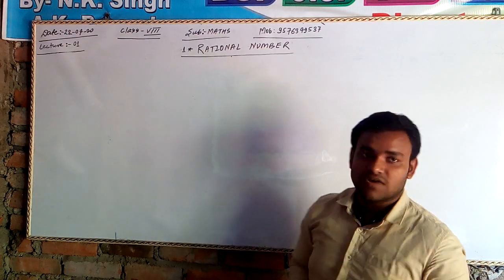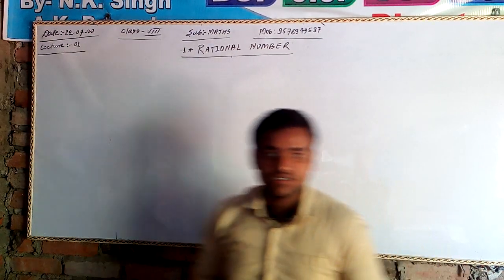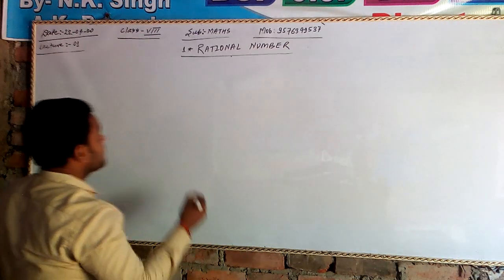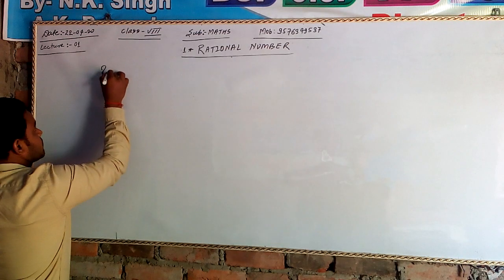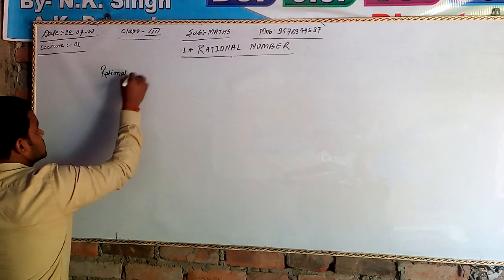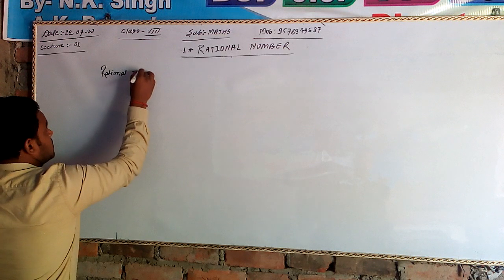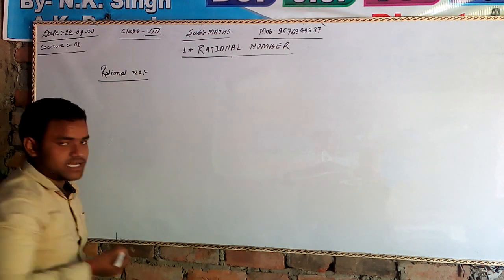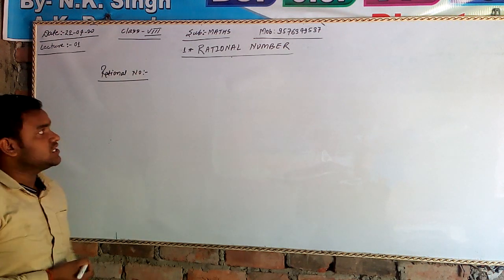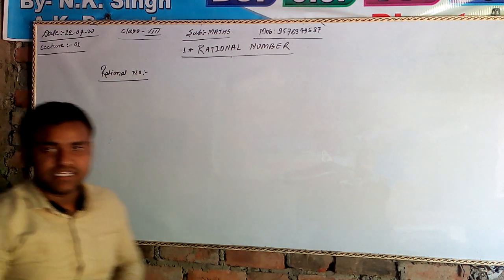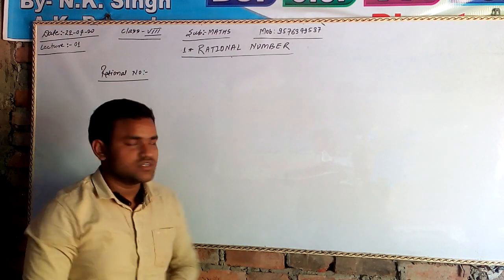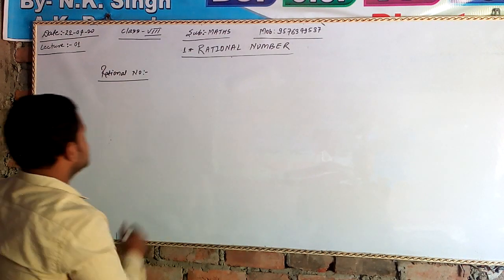Let's see what a rational number is. A rational number is the number which can be written in the form of P by Q, where P and Q are integers and Q is not equal to 0.